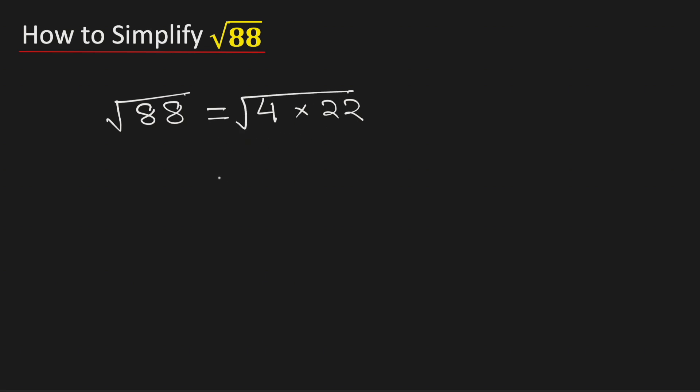The right-hand side can be written as square root of 4 times square root of 22, using the rule that square root of a times b equals square root of a times square root of b.